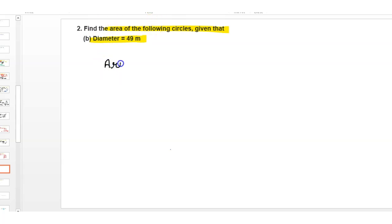First of all, we write here area of circle is equal to π r², where r is equal to radius.